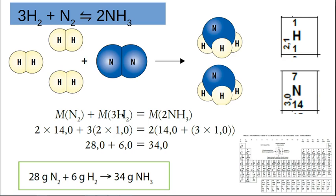I've got three hydrogen molecules. From the periodic table, hydrogen has a mass of one. I've got three diatomic molecules, so that's two times one for the two hydrogens in the diatomic molecule, and times three because I've got three hydrogen molecules per one nitrogen molecule. So two times one is two, times three is six. On my left-hand side I've got 28 plus six. Now we work out what's on the right-hand side — I've got two ammonias formed.